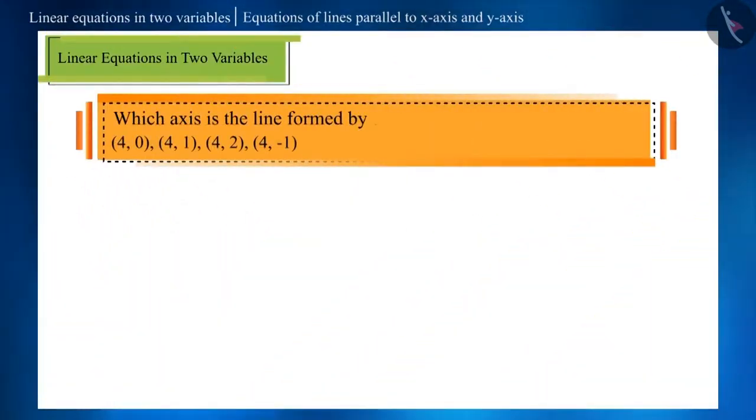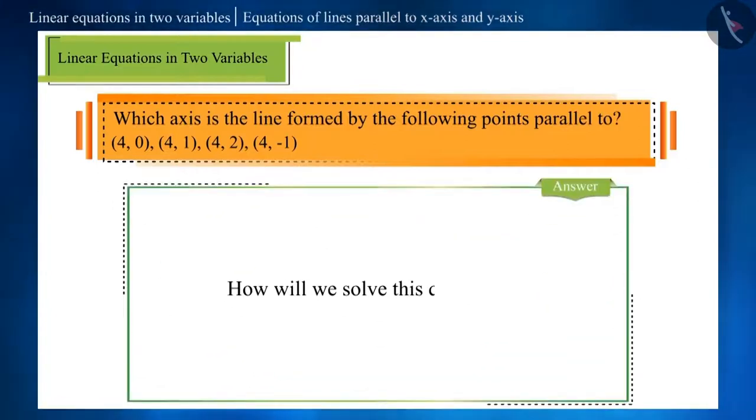Which axis is the line formed by the following points parallel to? How will we solve this question? Will you be plotting a graph and checking the same?